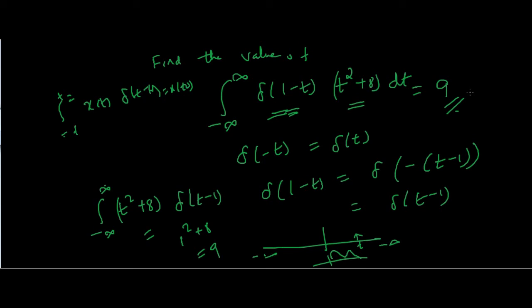In this video we have learned about what are signals, what is a system, various elementary signals, some properties, and what to do when we have to multiply two signals like x(t) and the delta function. In the next video we will proceed with the next part of signals and systems. For now, thanks for watching. Please subscribe to our YouTube channel and also visit our website. Thank you.